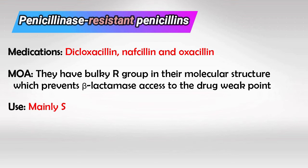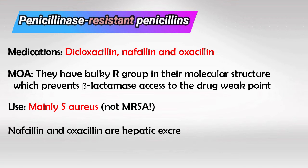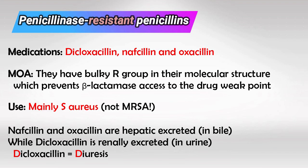They're mainly used for staph infections, which are the most common infection overall, but they're not used for MRSA infections. Nafcillin and oxacillin are excreted in the bile, while dicloxacillin is excreted in urine. Remember that dicloxacillin is like diuresis, and everything else is excreted in bile.